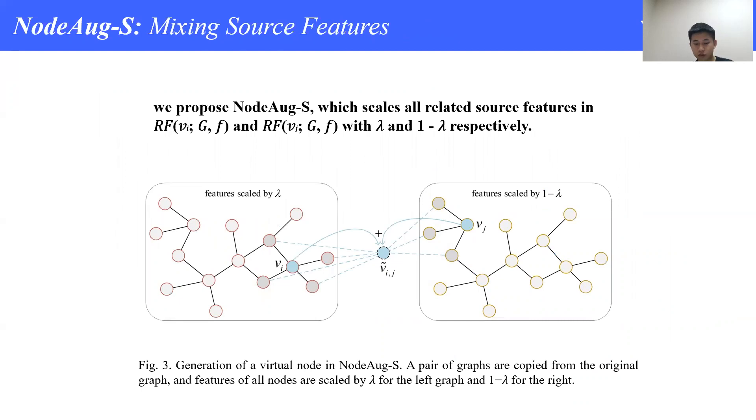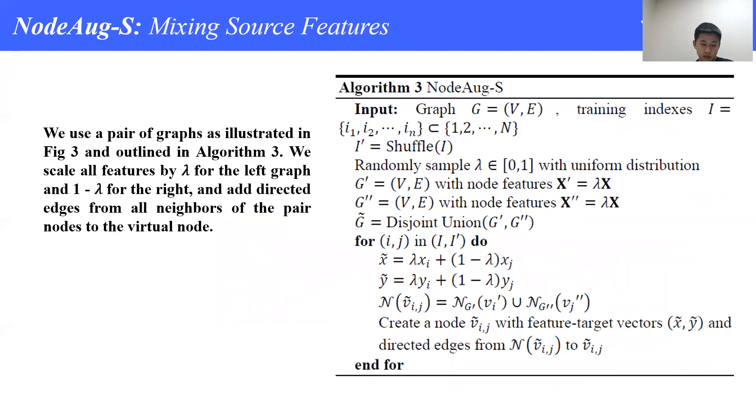Instead of sampling neighbors, a more straightforward way is to scale all node features that will influence the prediction of vi and vj. Our third variant is NodeAug-S. As shown in figure 3, NodeAug-S takes all neighbors of vi and vj as its neighbors, and scales the node features of the receptive field of vi and vj by lambda and 1 minus lambda respectively. The receptive field is a subgraph sampled by an algorithm defined in section 3 of our paper. Here are the details of NodeAug-S presented by pseudocode on the right. We make copies of the input graph, scale all node features by lambda and 1 minus lambda respectively, and add directed edges for all neighbors of the pair vi and vj to the new node vij.